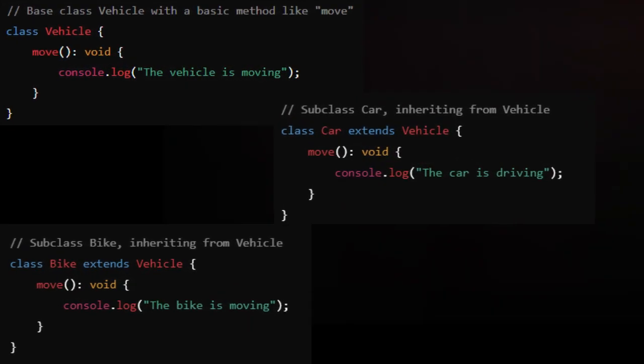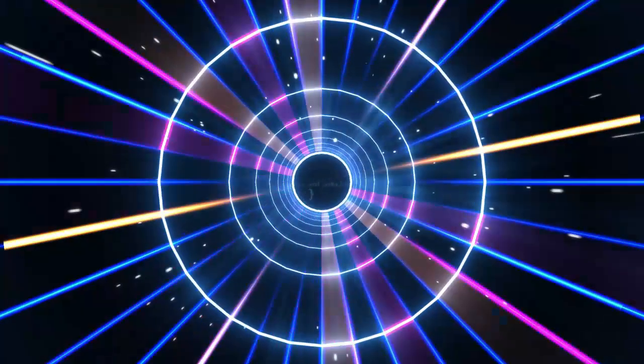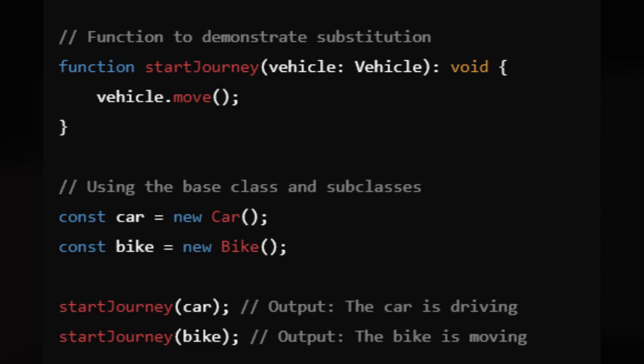A user interacts with both the car and bike objects in the same way, successfully calling the move method without any issues, demonstrating that the subtypes can be used interchangeably without altering the behavior of the program.